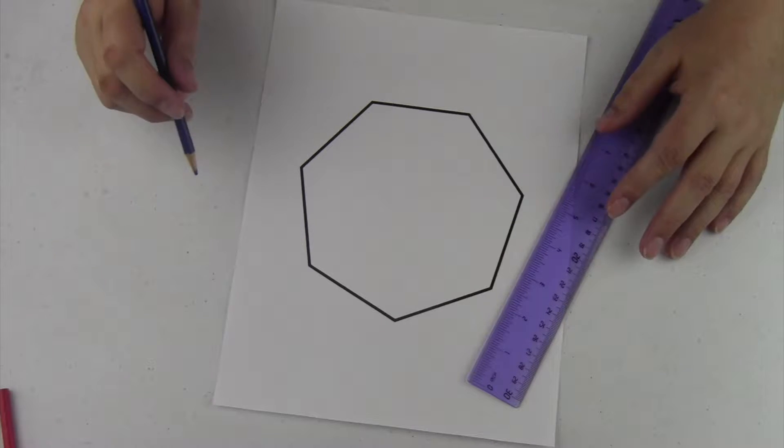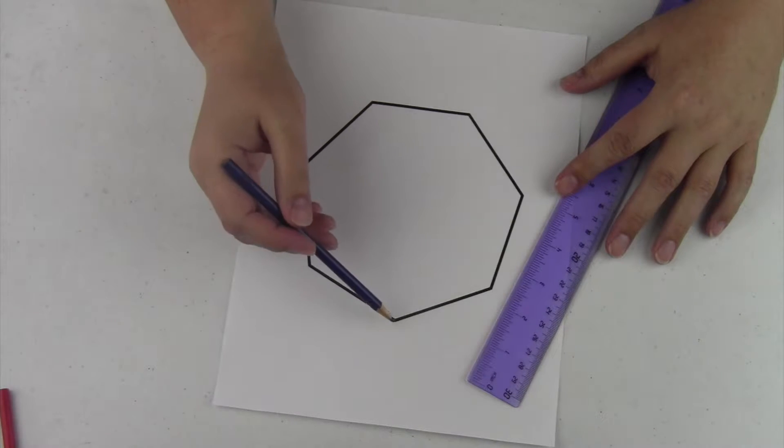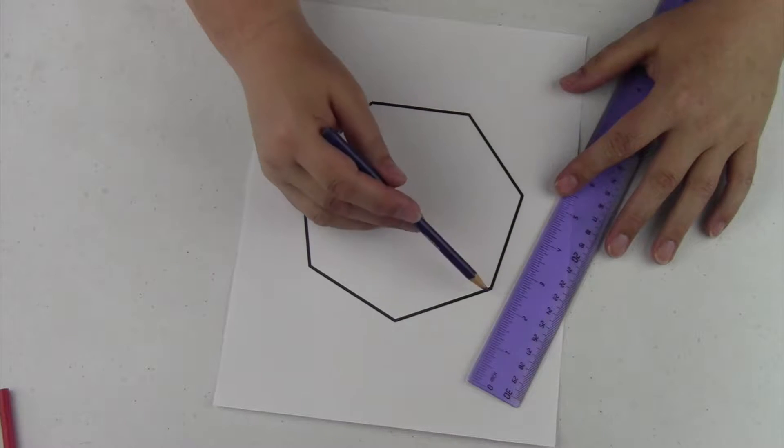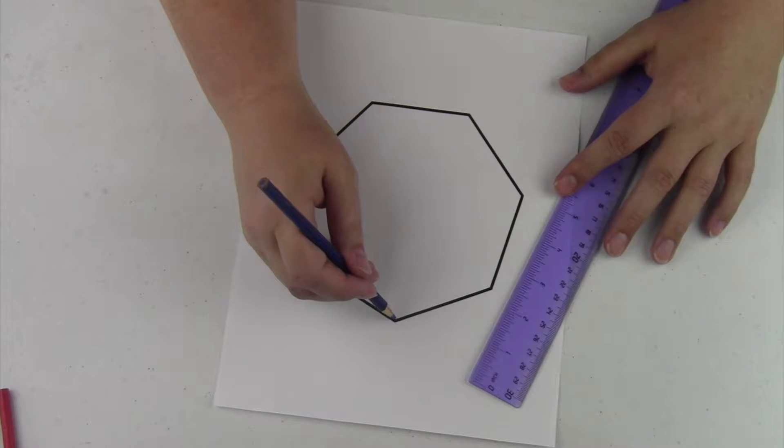Here is heptagram number two. In this one, we will be skipping two different angles. The first one we skipped one, this one will be two.